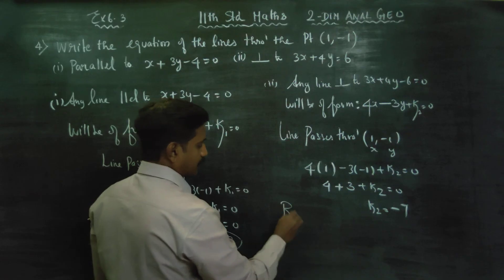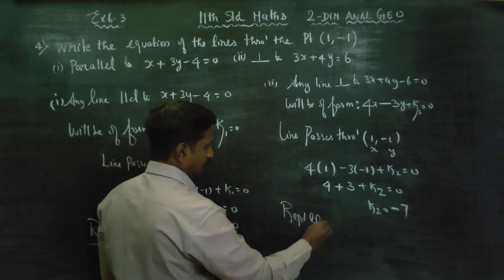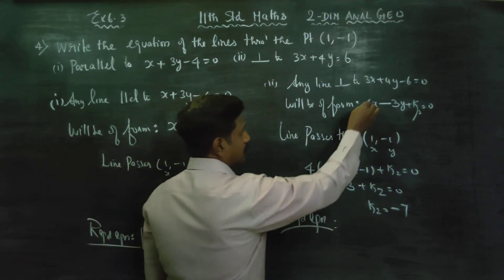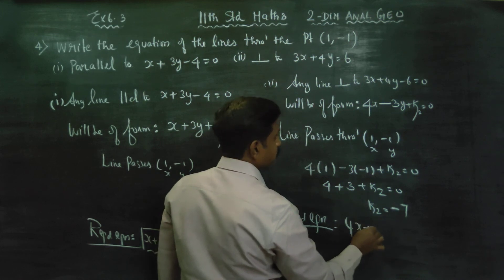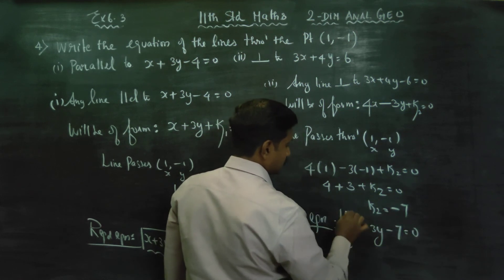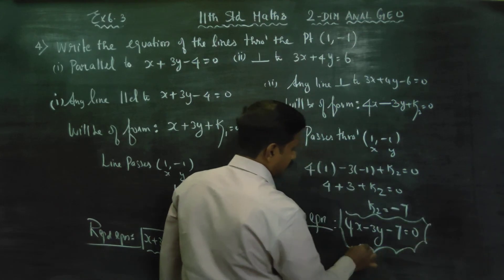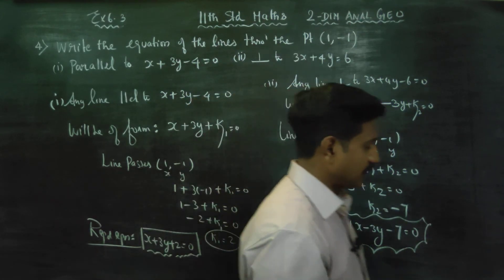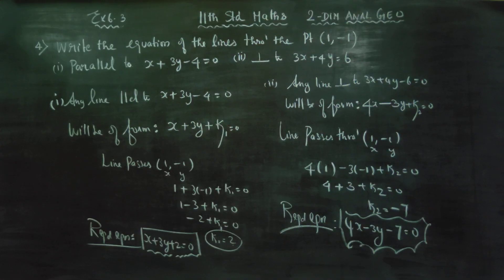The required equation will be 4x minus 3y minus 7 equals 0. This is your required answer. Thank you.